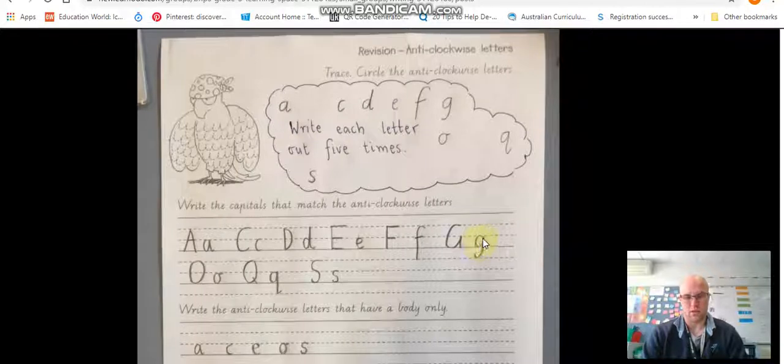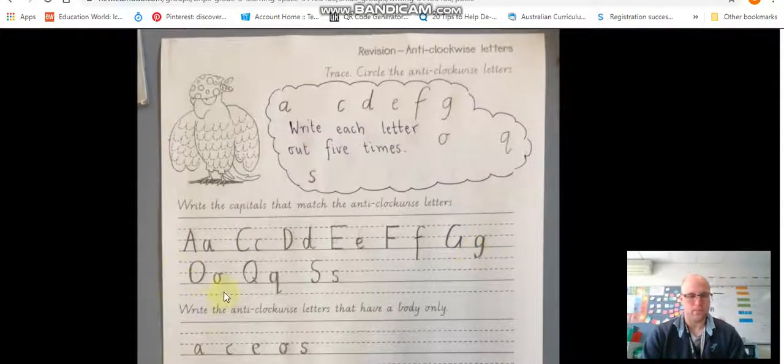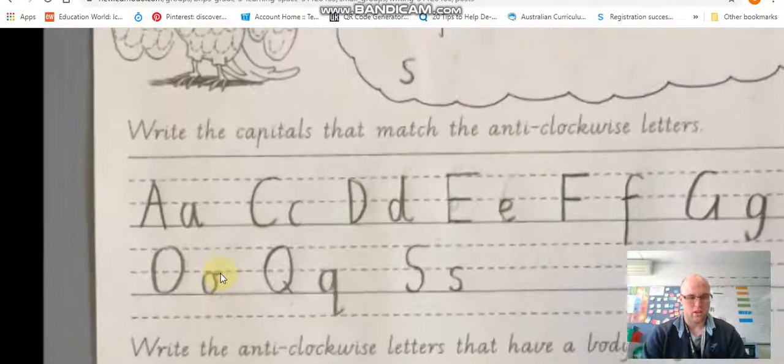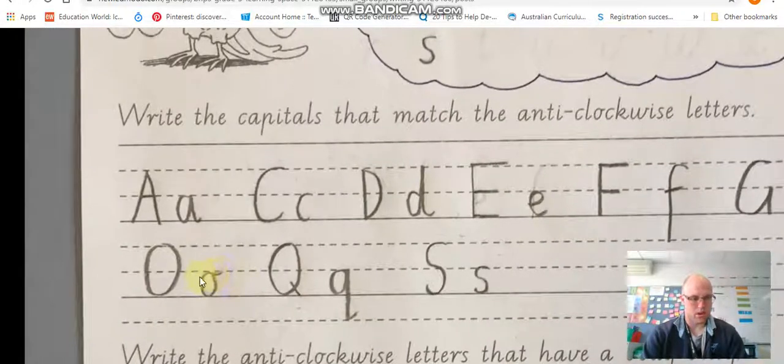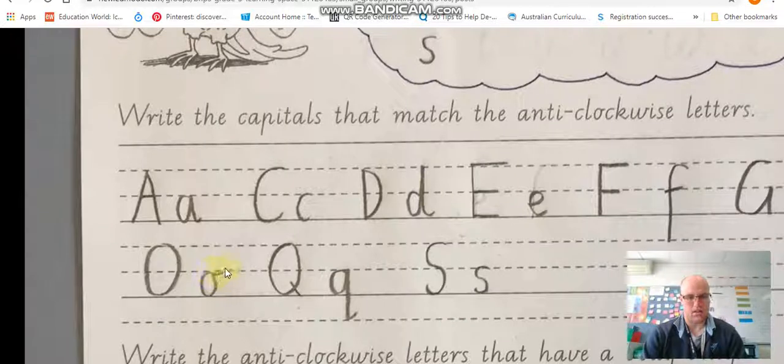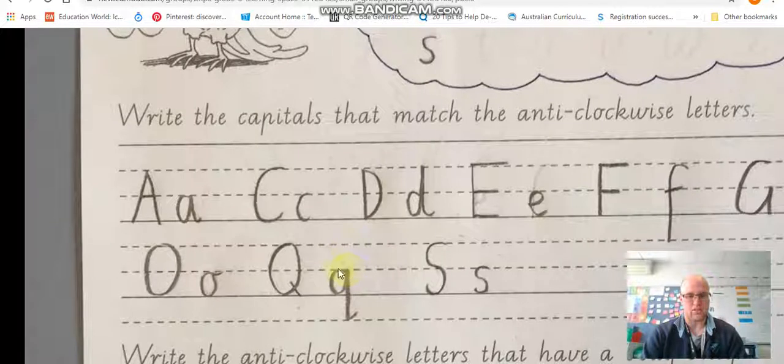G's start here. They go around back up to where it starts and then you do the loop at the bottom. O's start in this corner. Go around and then they have that little flick. So I'm just going to zoom in a bit. Don't just make your O look like this. Alright it has to have that flick for it to be a properly formed O.